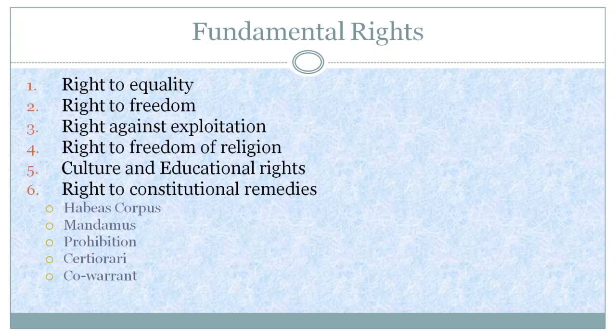Right against Exploitation: The aim of this right is to prevent exploitation of women, children, the poor and the weak. Begging, the devadasi system, the practice of sati, immoral activities and forced labor have been prohibited. Employment of children under 14 years of age in mining, industries and other dangerous occupations is punishable under law.